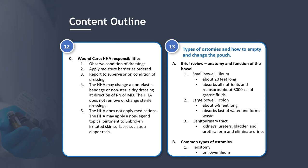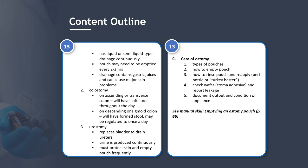Common types of ostomies: ileostomy — located on the lower ileum, has liquid or semi-liquid drainage continuously, the pouch may need to be emptied every 2 to 3 hours, and the drainage contains gastric juices which can cause major skin problems. Colostomy — on the ascending or transverse colon will have soft stool throughout the day; on the descending or sigmoid colon will have formed stool and may be regulated to once a day. Urostomy — replaces the bladder to drain ureters, urine is produced continuously, and you must protect the skin and empty the pouch frequently. Care of ostomy includes types of pouches, how to empty and rinse pouches, using a peri bottle or turkey baster, checking the wafer or stoma adhesive, reporting any leakage, and documenting the output and condition of the appliance.